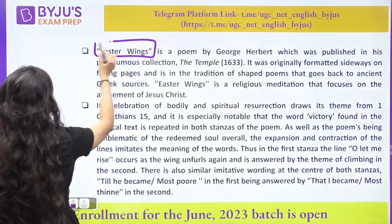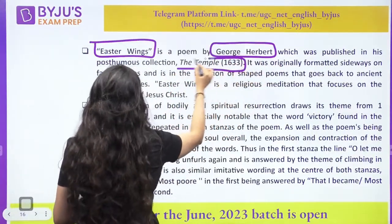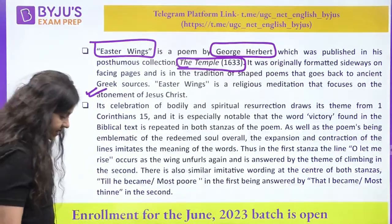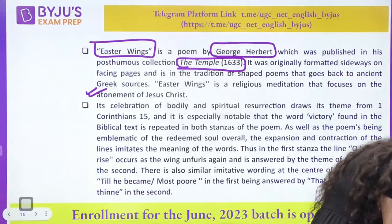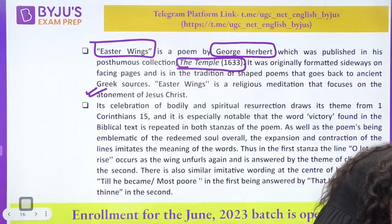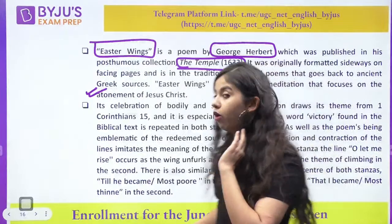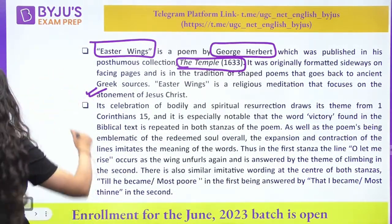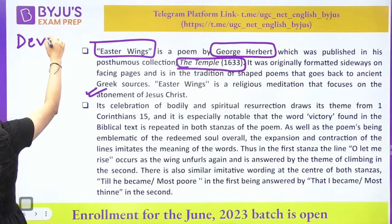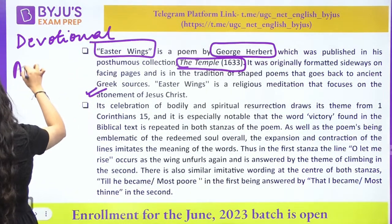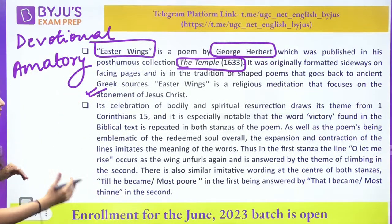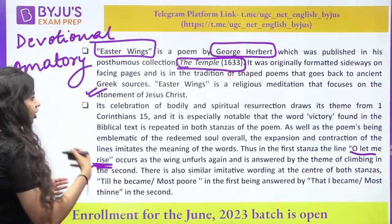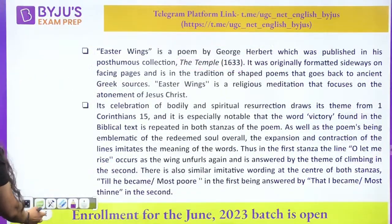Moving on to the next pointer — Easter Wings by George Herbert. This is a work that was coming in The Temple, which was posthumously published. We are able to see that this is basically trying to tell you about the atonement of Jesus Christ. Your 17th century writers are trying to talk about either devotional themes or amatory writings. On the first stanza, the line 'Oh, let me rise' — there is a very colloquial bond with God being associated here. Metaphysical poets — 17th century writers — devotional themes are coming in as well as amatory writings.